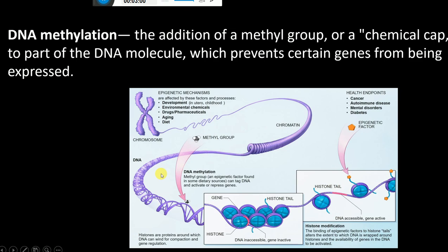DNA methylation is the addition of a methyl group — a chemical cap — to part of the DNA molecule, which prevents certain genes from being expressed. The name is very clear: the addition of a methyl group to the DNA molecule.